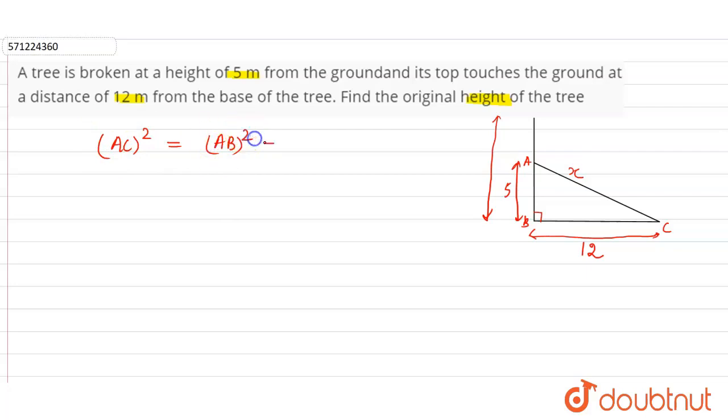So AC we have to find. We have let AC equal to x, so x squared equals AB squared. AB is 5, so 5 squared plus BC. BC is 12 meters, so 12 squared. So x squared will equal 5 squared, that's 25, and 12 squared is 144.